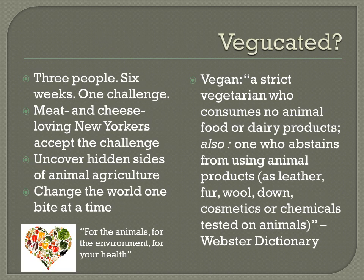What exactly is Vegucated? Vegucated follows three people for six weeks on one challenge as they become vegan. What is vegan, you may ask? The Webster Dictionary defines vegan as a strict vegetarian who consumes no animal food or dairy products, also one who abstains from using any animal products themselves such as leather, wool, and even cosmetics that were tested on animals.